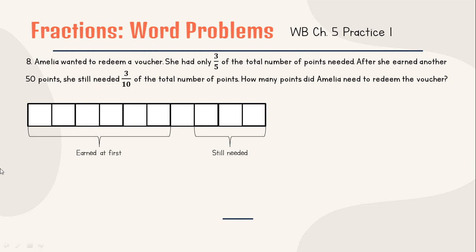Earned at first is 1, 2, 3, 4, 5, 6/10. And now still needed 3/10. And now she earned another 50 points. Can we place these 50 points into the box? Yes, so that is 50 points. So 3/5 at first is 1, 2, 3. And then earn another 50 points, and then needed 3/10.